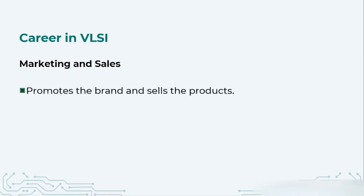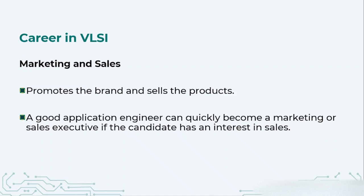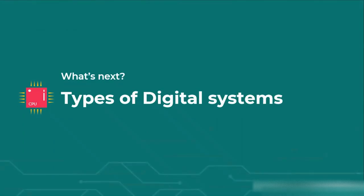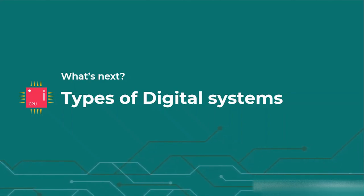One more option is marketing and sales. Here you are primarily promoting the brand and selling products. A good application engineer who wants to switch to this domain can become a marketing or sales executive. You are mainly responsible for contacting clients, approaching them, giving demos of your product, and providing post-sales services as well. Next we are going to talk about the different types of digital systems and which of those we are going to cover in our training program. Keep learning. Thank you.